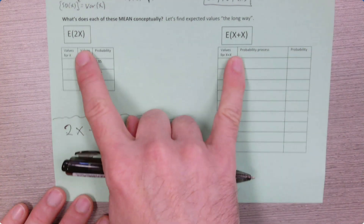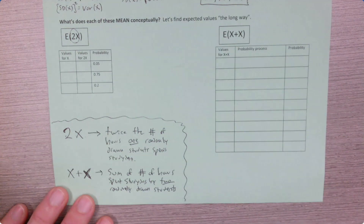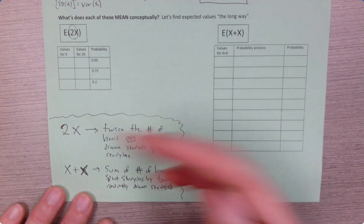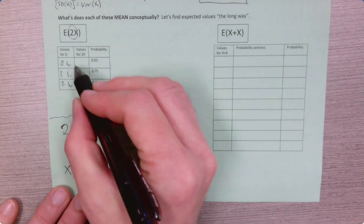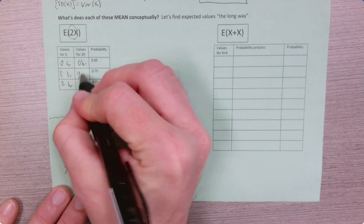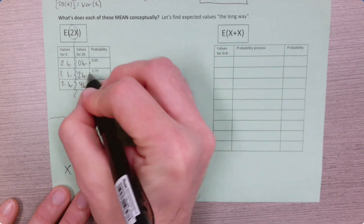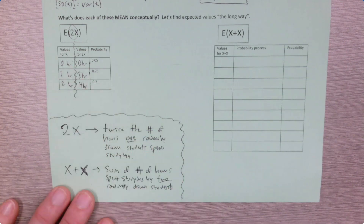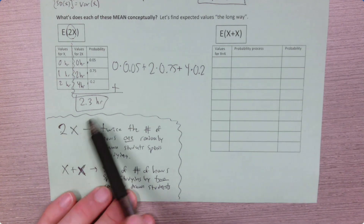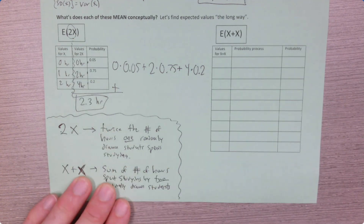Let's think about expected value the long way for each of these. The expected value of twice the number of hours spent studying — let's calculate in the same way we always calculate expected value. The different outcomes for x might be 0, 1, or 2 hours, but we want the expected value of twice x. So we multiply each outcome: 0 hours, 2 hours, 4 hours. Multiplying each by its probability and adding up, we get 2.3 hours — twice as long as a randomly drawn student would expect to spend.